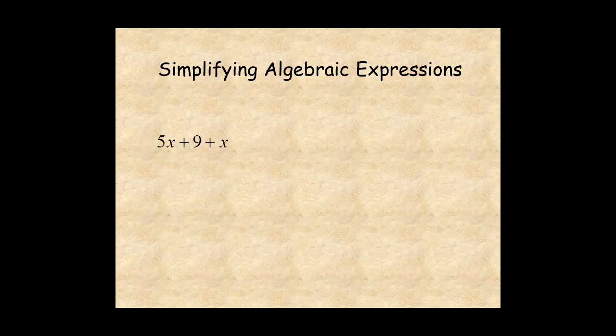One way to simplify algebraic expressions is to combine like terms. In this expression, you have two like terms, 5x and x, which you read as 5x and 1x. Think of having 5 apples and 1 apple. All together, you have 6 apples. So, you do the same thing here. To combine like terms, just add them together.